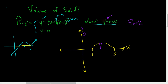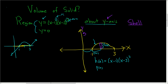Now we need to identify two things: h of x and p of x. So h of x is the height, or the length, of the long part of the rectangle. And p of x is the distance from the skinny piece of the rectangle — it's called the average radius — all the way to the axis of revolution. In this case, h of x is simply the function we have here: h of x equals (x minus 1)(x minus 3) squared. And p of x, well, this distance here is just x, so p of x equals x.